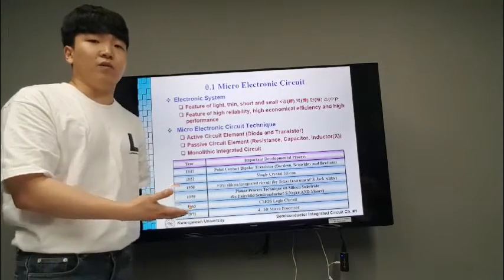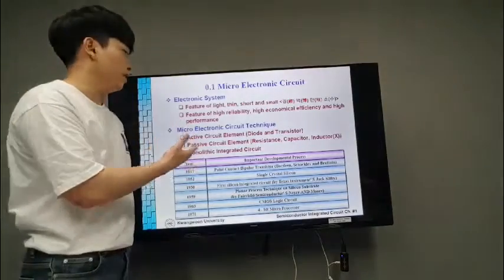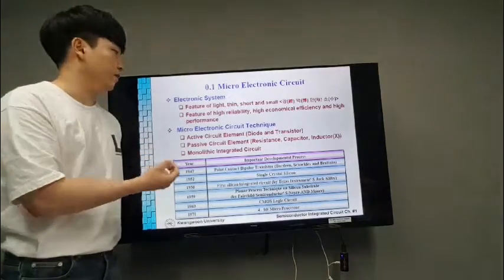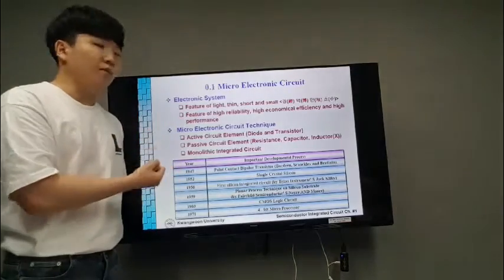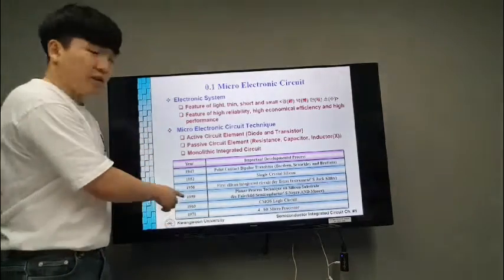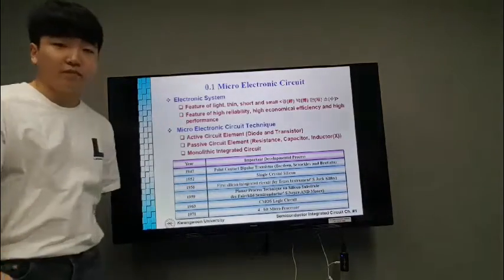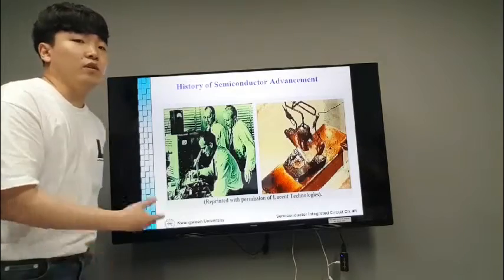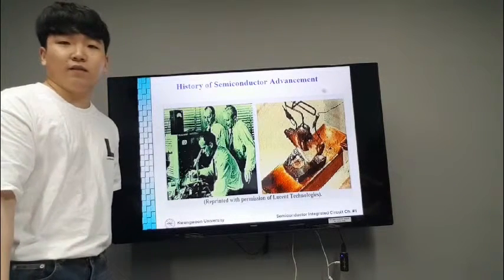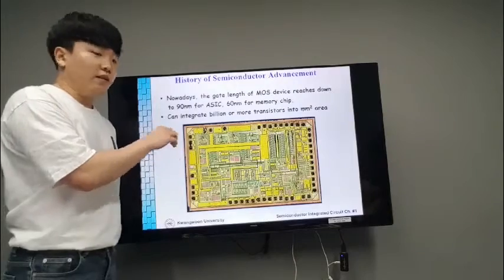First, I will explain about Microelectronics Circuit. The most important features of an electronic system are that it should be lightweight and thin and short and small, and it should be reliable and have high economic efficiency and high performance. This figure shows an important developmental process of the Microelectronics Circuit. The early semiconductor was developed at Bell's Lab and it has developed from transistor to chip-bomb and is getting smoother.